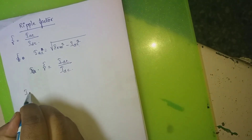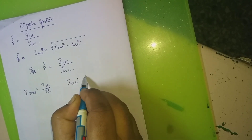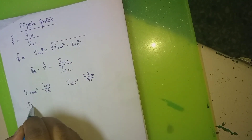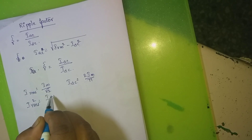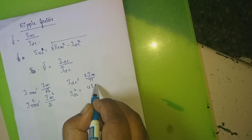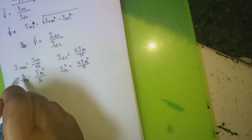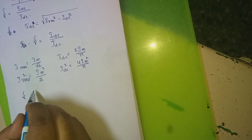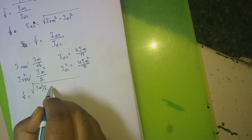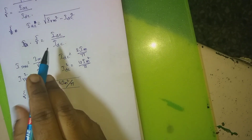We know the expressions: IRMS equals IM divided by root 2, and IDC equals 2IM divided by pi. Taking squares on both sides: IRMS squared equals IM squared divided by 2, and IDC squared equals 4IM squared divided by pi squared. Substituting these values into the expression for gamma, we get the square root of (IM squared over 2 minus 4IM squared over pi squared), divided by IDC.